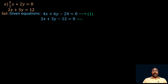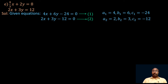Take them as equation 1 and equation 2. By comparing these two equations with the standard form a1x plus b1y plus c1 equals 0 and a2x plus b2y plus c2 equals 0, we have: a1 equals 4, b1 equals 6, c1 equals minus 24 from equation 1, and a2 equals 2, b2 equals 3, c2 equals minus 12 from equation 2.